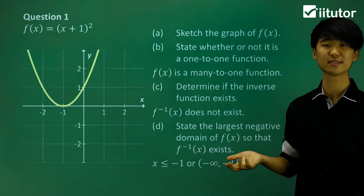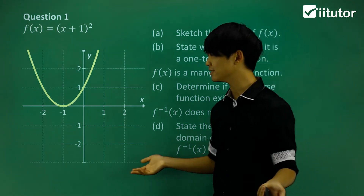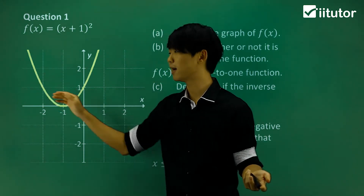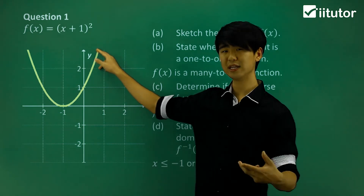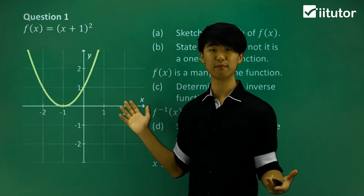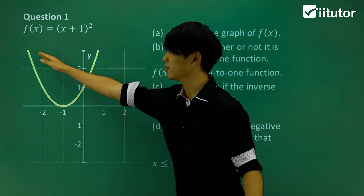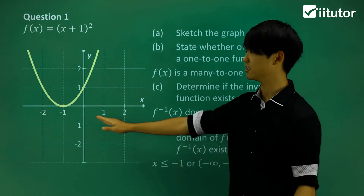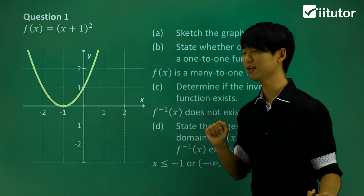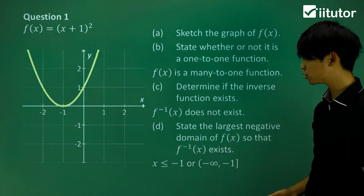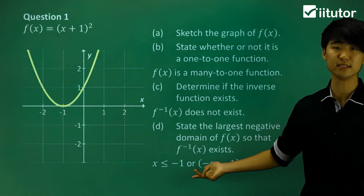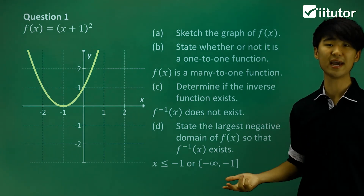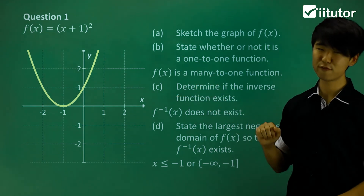The largest negative domain to make this one-to-one is x ≤ -1. From the vertex point at x = -1, if we remove the right portion of the graph and keep only the left part, it becomes a one-to-one function. We can then reflect it and an inverse function will exist. We can also express this using interval notation: the domain is (-∞, -1]. So by restricting the domain to x ≤ -1, the inverse function for this parabola exists.